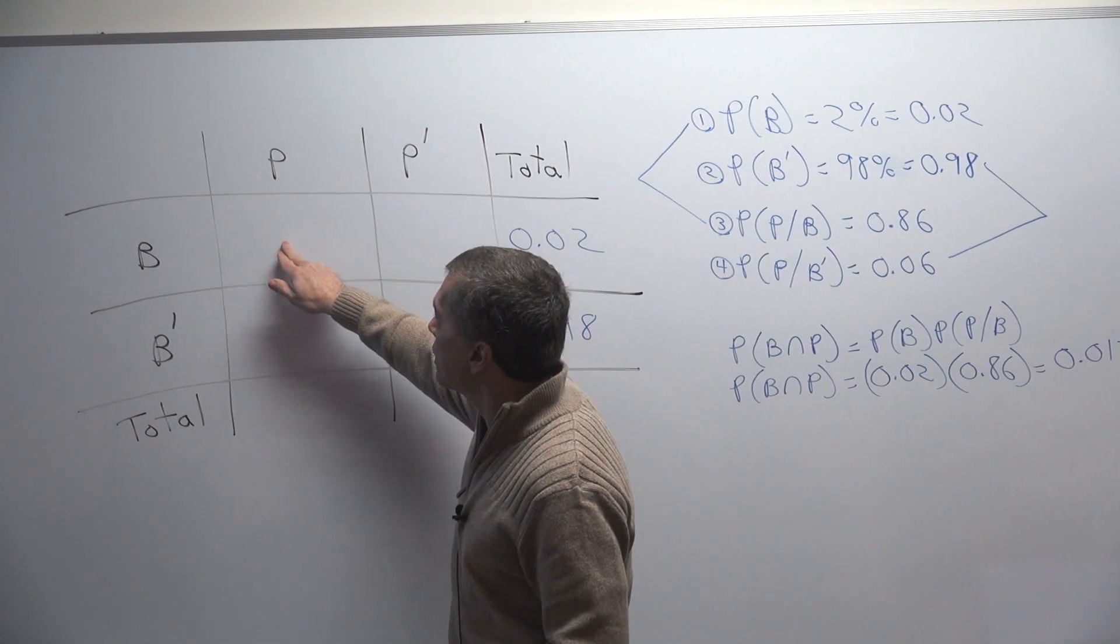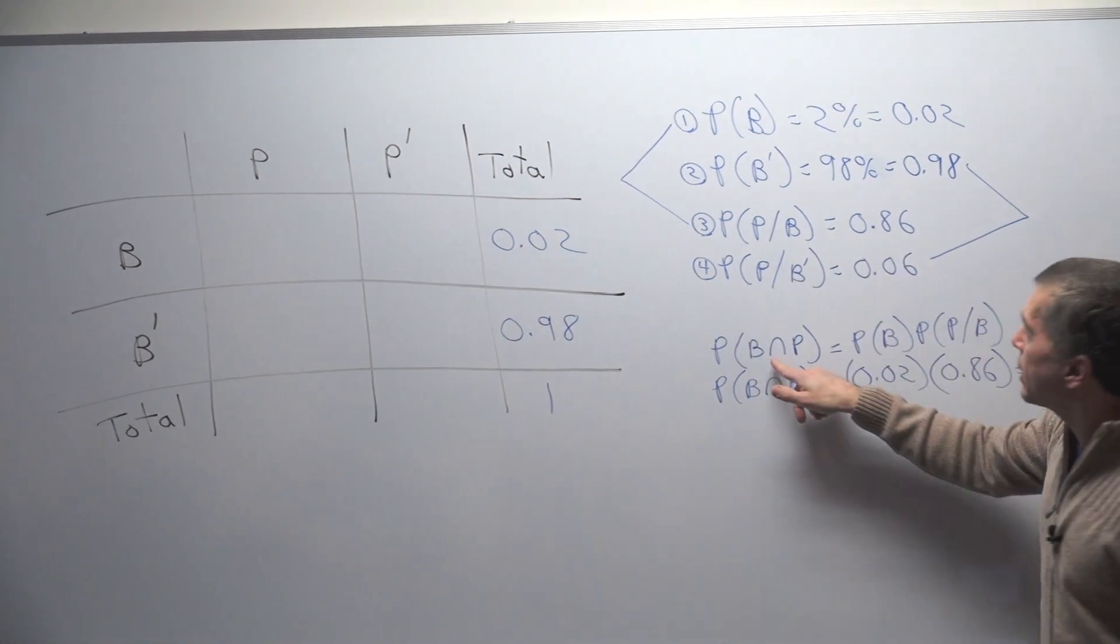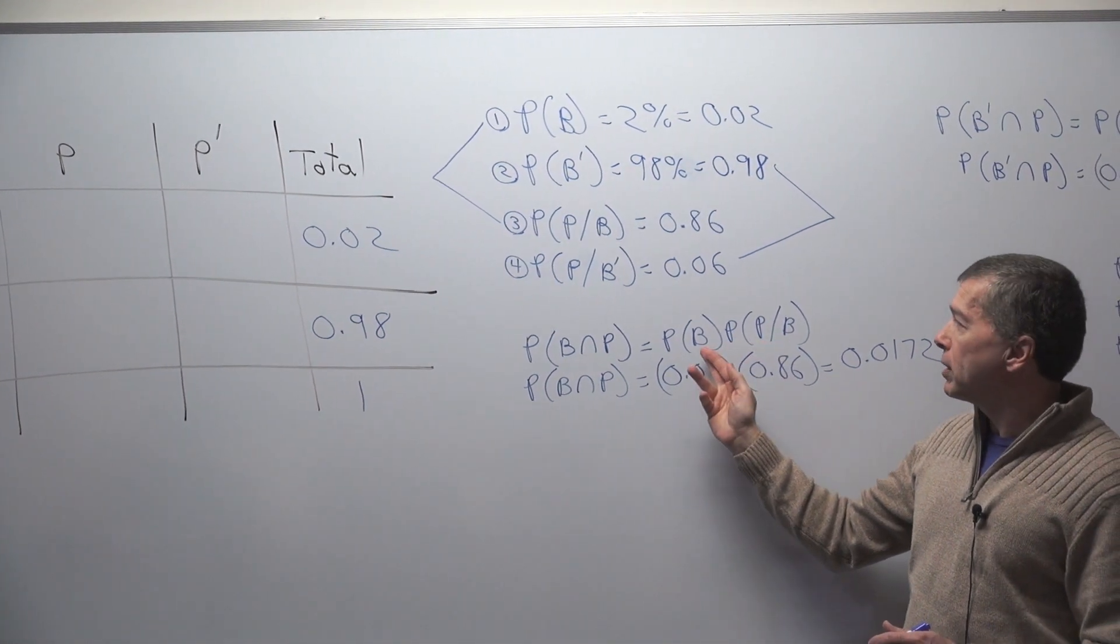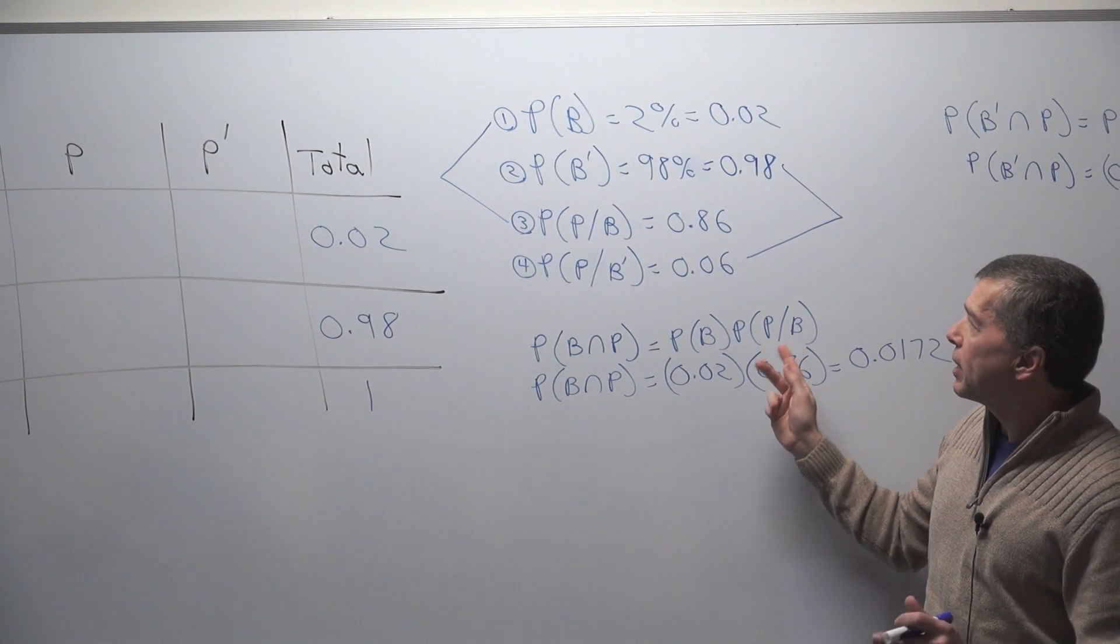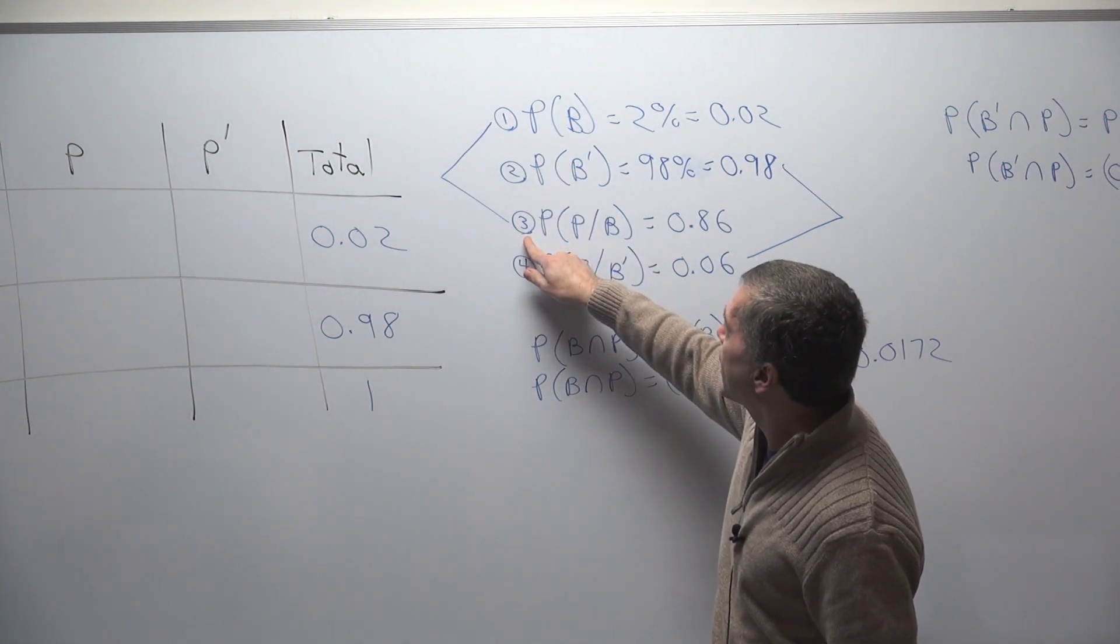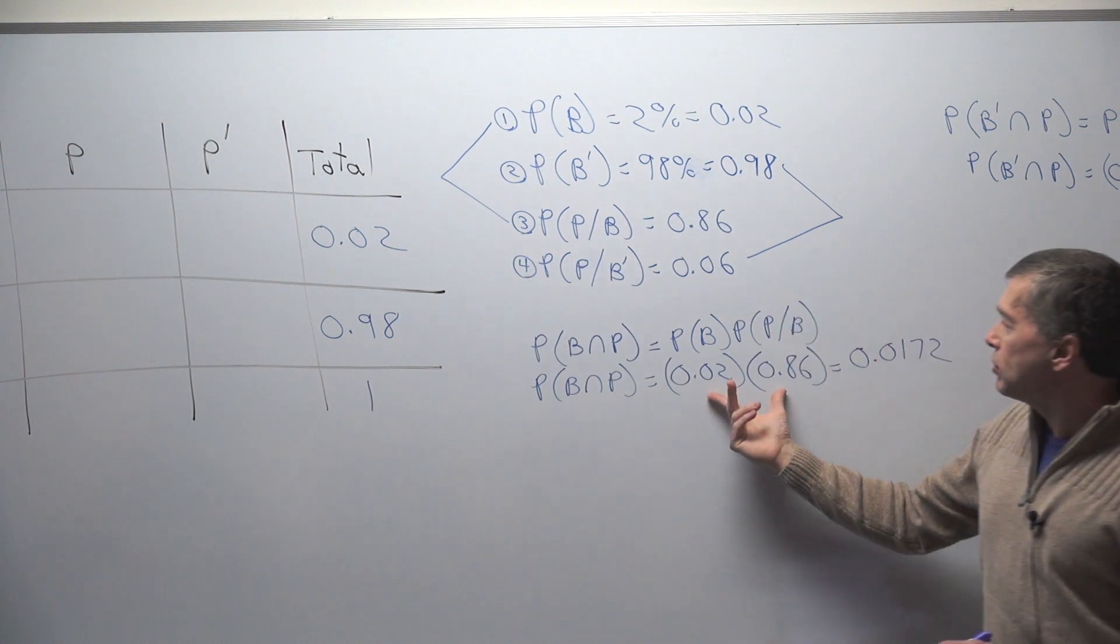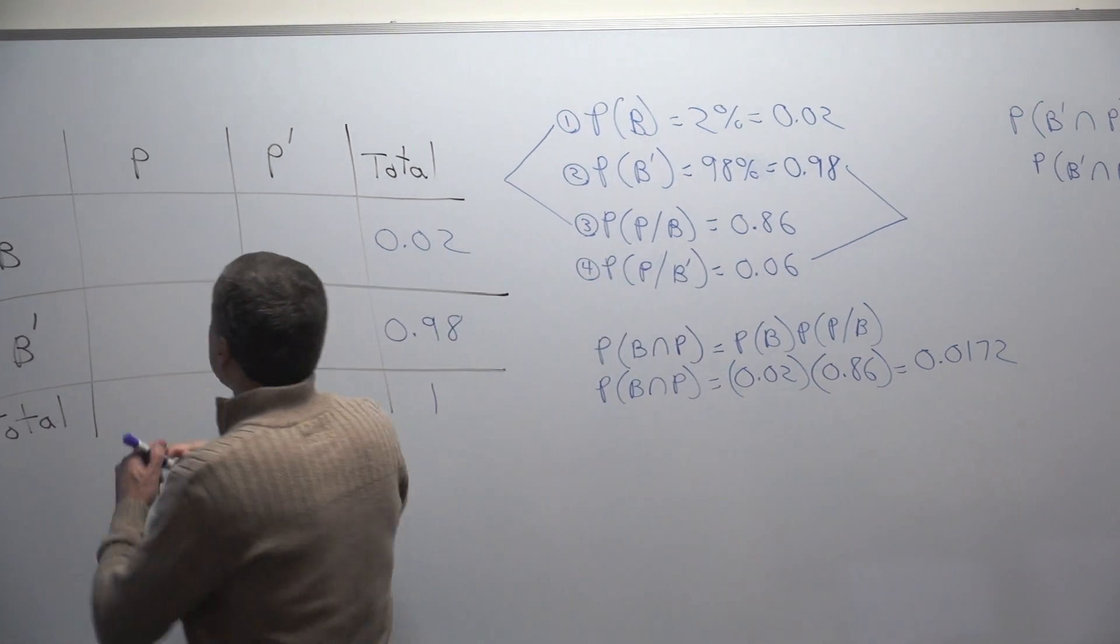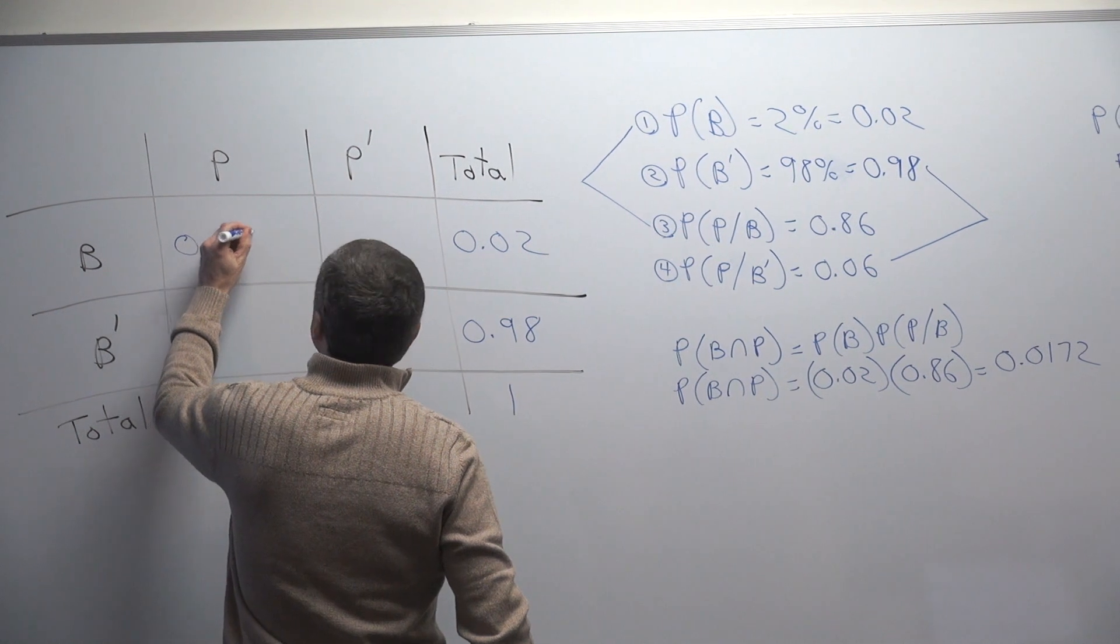For example to get this blank right here, this is the probability of breast cancer and a positive result. We can get the probability of breast cancer and a positive result by multiplying these two things together. By multiplying the probability of breast cancer times the probability of a positive result given breast cancer. These are number 1 and 3. So you multiply these together and you get this value. The value right here is 0.0172.